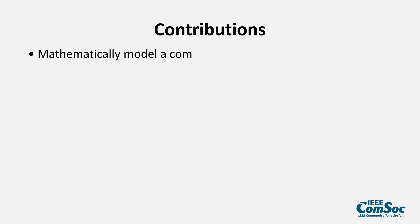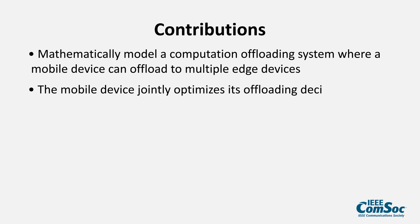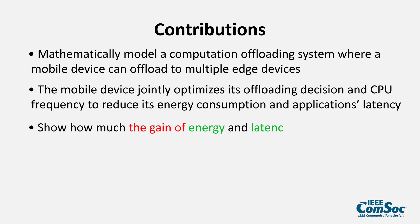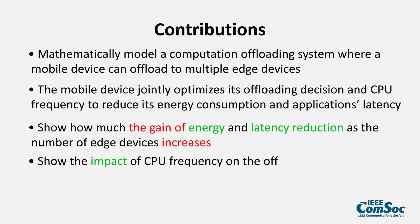In the paper, we have four main contributions. First, we mathematically model our computation offloading system, where a mobile device can offload to multiple edge devices. Second, in this model, the mobile device can optimize its offloading decision and CPU frequency to reduce its energy consumption and application latency. Third, we show the relationship between the gain of energy and latency reduction and the number of edge devices. Finally, we show the impact of CPU frequency on the offloading decision.